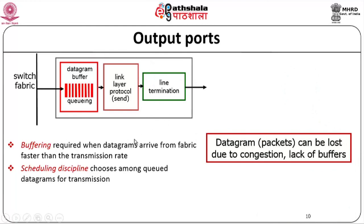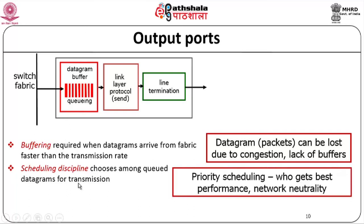Since datagrams are queued or buffered, they could be lost due to congestion. Congestion occurs when more packets come in than the queues can handle, resulting in packet drops due to lack of buffers. With a scheduling discipline, priority scheduling or differential services can be provided — determining who gets best performance and addressing network neutrality. These are important mechanisms for managing congestion and providing differential treatment for different packets.